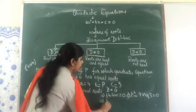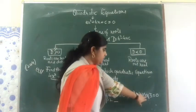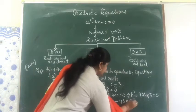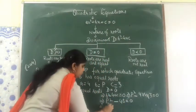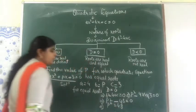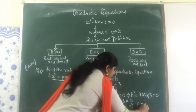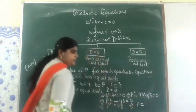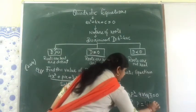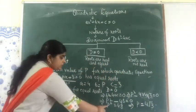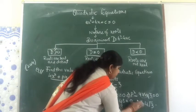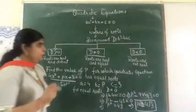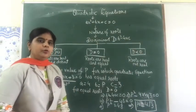So I will get p² - 4 × 4 × 3 = 0, which gives p² - 48 = 0, so p² = 48. When you take the square root of 48, it is already factorized — 4 outside the root and √3 inside. Because it is a square, we will get two values: p = ±4√3.